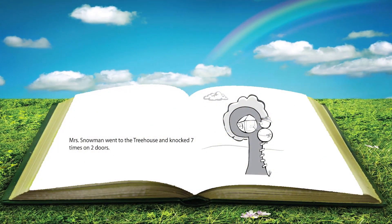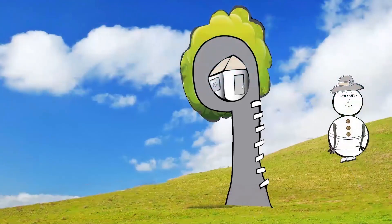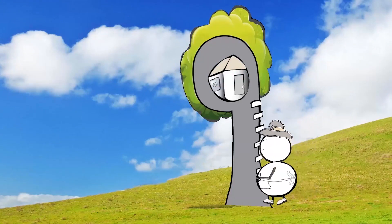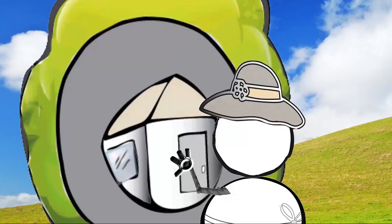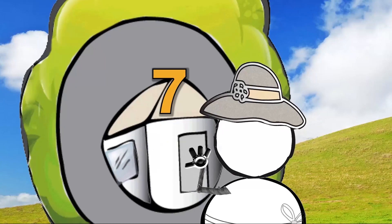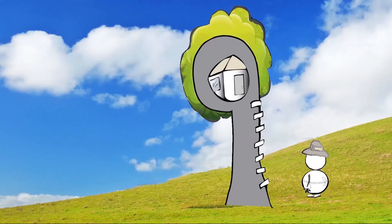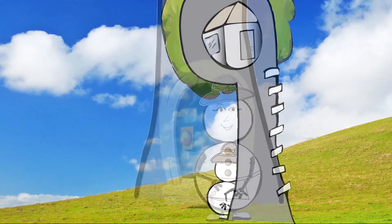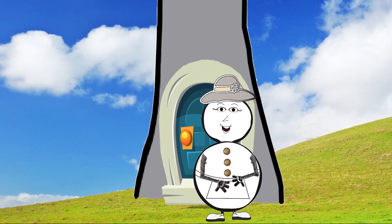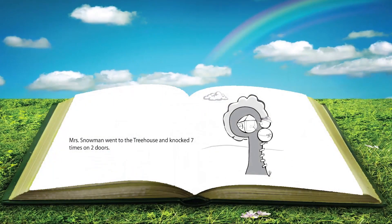Mrs. Snowman went to the treehouse and knocked seven times on two doors. I wonder who lives there? Maybe it's a friend. Seven times is a lot of knocking! It looks like no one's home. Do you know why she knocked on two doors? She also went to the back door — I guess no one's home. Mrs. Snowman went to the treehouse and knocked seven times on two doors.